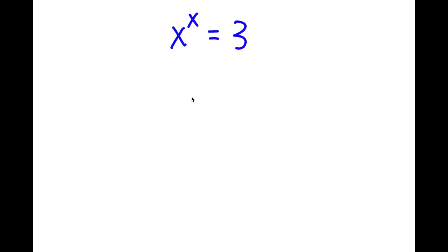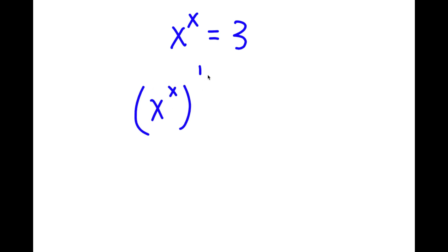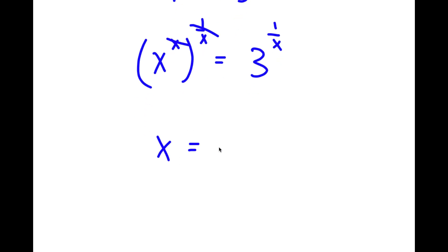In this problem, I have x to the power of x is equal to 3. To solve this, I'm first going to take the power of 1 over x on both sides. So I have x to the power of x to the power of 1 over x is equal to 3 to the power of 1 over x. Now x and 1 over x cancel out, so I have x is equal to 3 to the power of 1 over x.